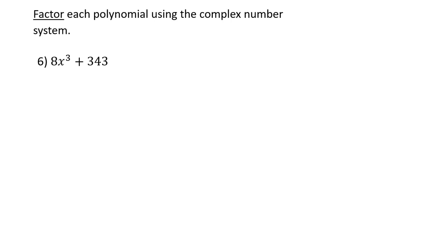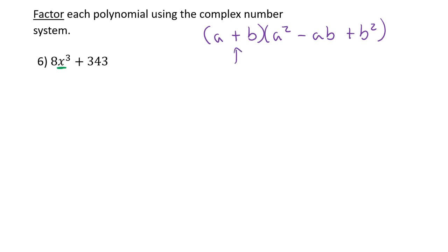Now we have another two-term polynomial. With x-cubed present, this is a sum of cubes. The formula is: (a plus b)(a-squared minus ab plus b-squared). Using SOAP: Same sign as the original, Opposite sign, Always Positive.